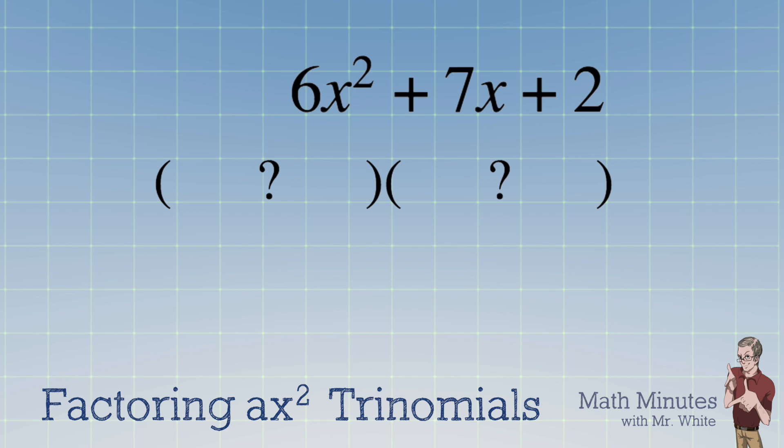So given our trinomial, we grab the leading coefficient, which is 6, and the constant at the end, and we multiply those two numbers together. So 6 times 2 is 12.